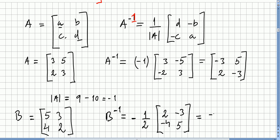So multiplying through by minus one half: minus one half times 2 gives minus 1; this entry gives 3 halves; minus minus gives plus, so 4 divided by 2 is 2; and minus 5 over 2.